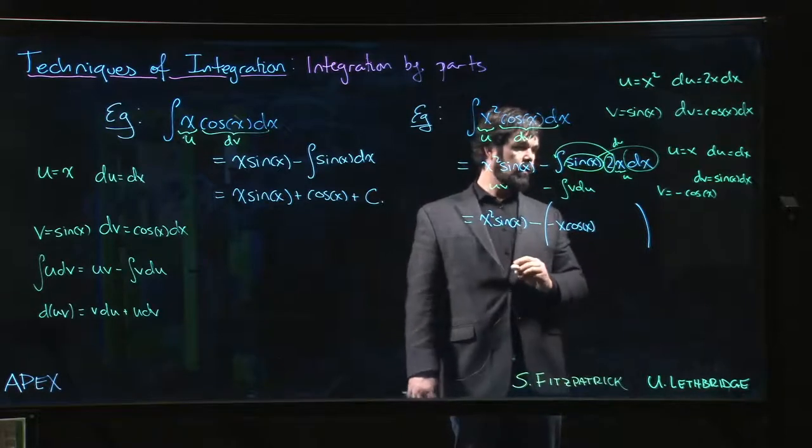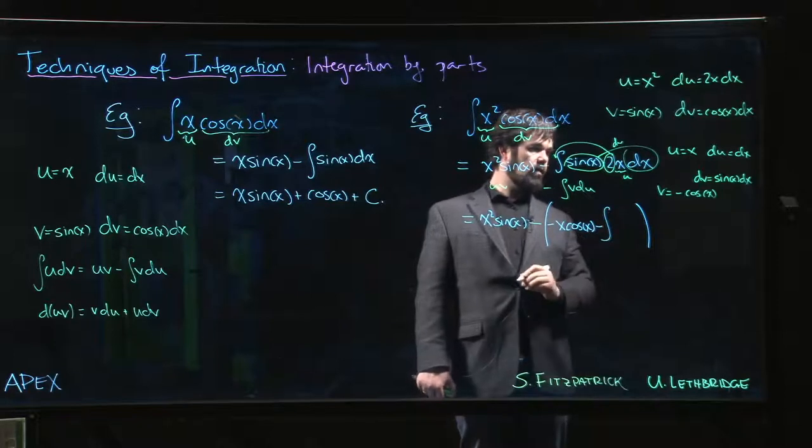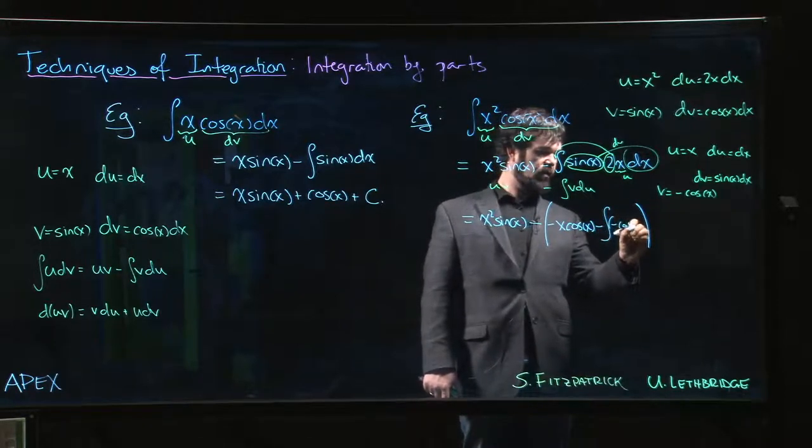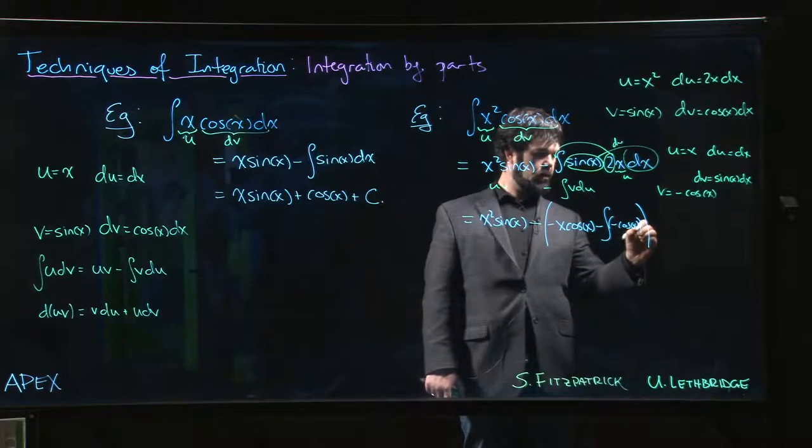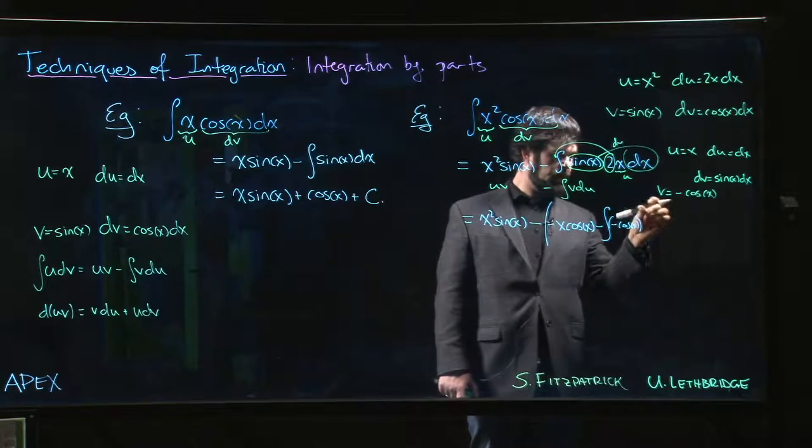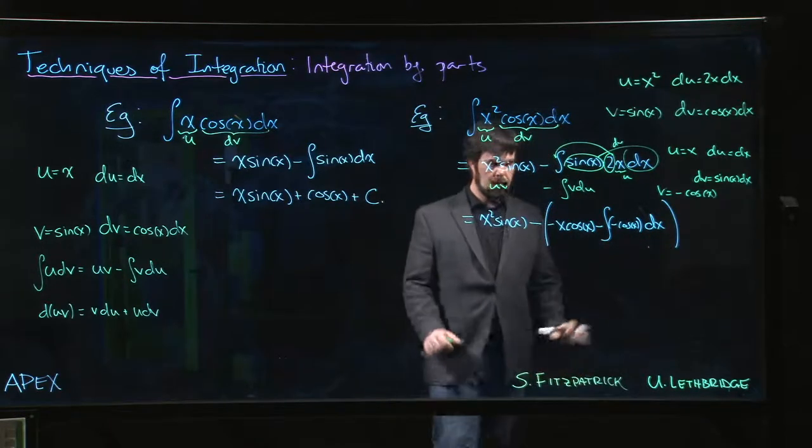Minus x cos x. Subtract integral of v which is minus cos x times dx.